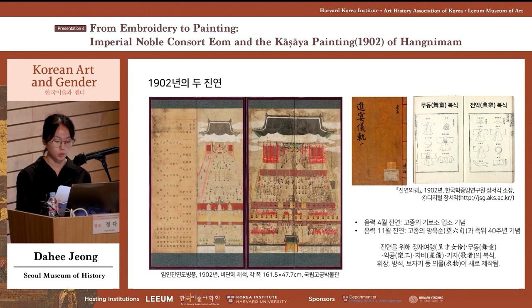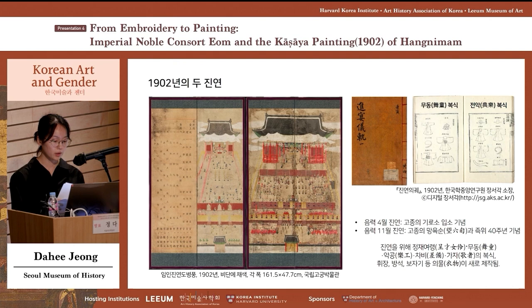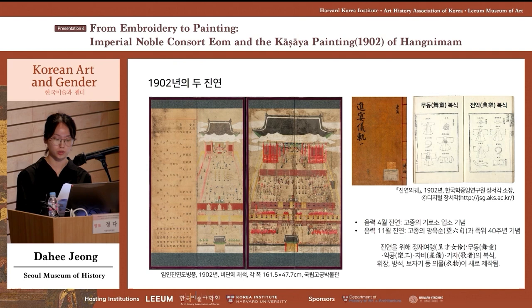One banquet was held in April to celebrate Gojong's entrance into Gisaro and another in November for his 40th anniversary on the throne, requiring a significant amount of new clothing. Especially in July 1902, they started to prepare for the November banquet, so most needle workers were committed to making clothing for the banquets. Therefore, the lack of needle workers is probably why they commissioned Ga Sa Taeng to replace actual real-life embroidery.